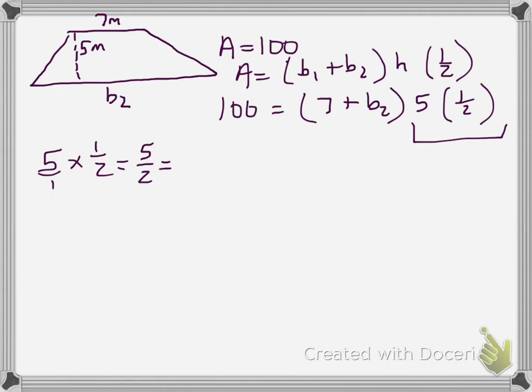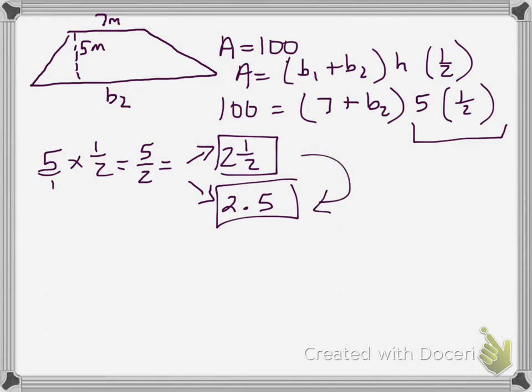And if you divide this out, there's two different possible answers that you could get. One might look like this, 2 and 1 half. And the other might look like this, 2 and 5 tenths. Now, these are equal, but I would recommend using the decimal version in this problem.